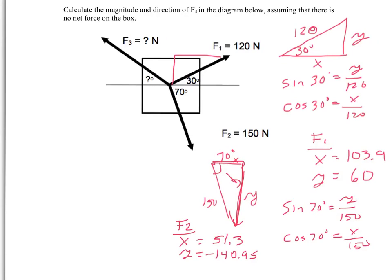So now I want to find out what F3 is. And what I know so far is that F2 has these components and F1 has these components. So F3 must have components that exactly cancel these two. So the best way to figure that out is to say, what is F1 plus F2 together? What are their components? So they're the x and y of F1 and F2.